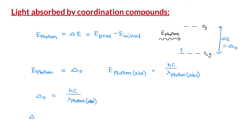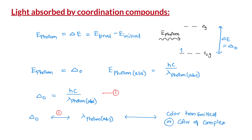So if we know the crystal field splitting energy for a complex, we can calculate the wavelength of the photon it absorbs using that equation. And if we know the wavelength of the color it absorbs, we can determine the color of the coordination complex using the color wheel. In conclusion, the color of the complex depends on the crystal field splitting energy, and any factors that alter the crystal field splitting energy can also change the color of the complex.